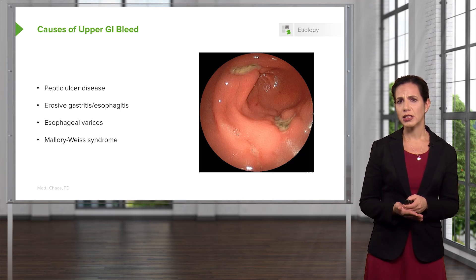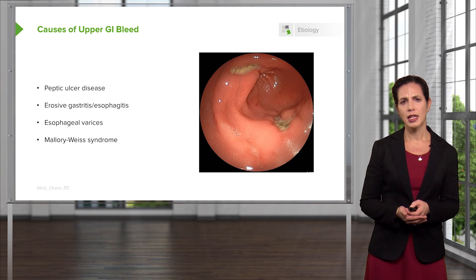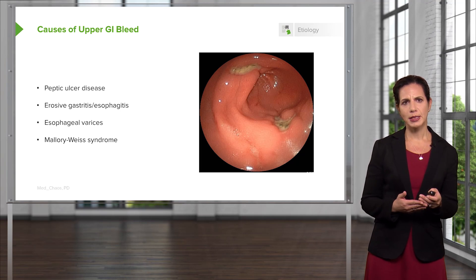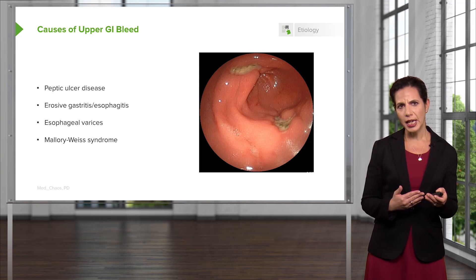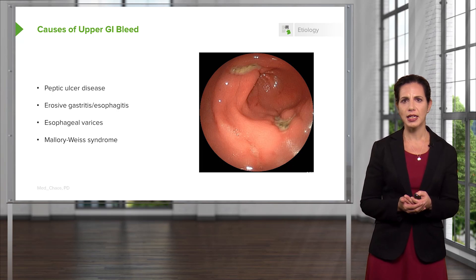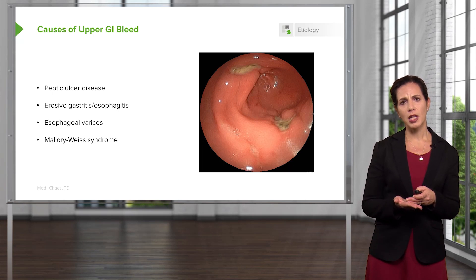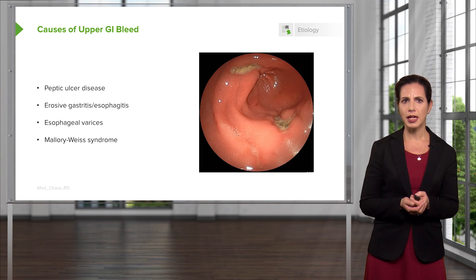Peptic ulcer disease is when a patient has an ulcer in their stomach or in the beginning parts of their small intestine. This is often a chronic problem where patients may experience abdominal pain, potentially worse after eating, sometimes better after eating, depending on where the ulcer is located. At the base of that ulcer, if there's a blood vessel and it gets eroded, that's what causes the bleeding.